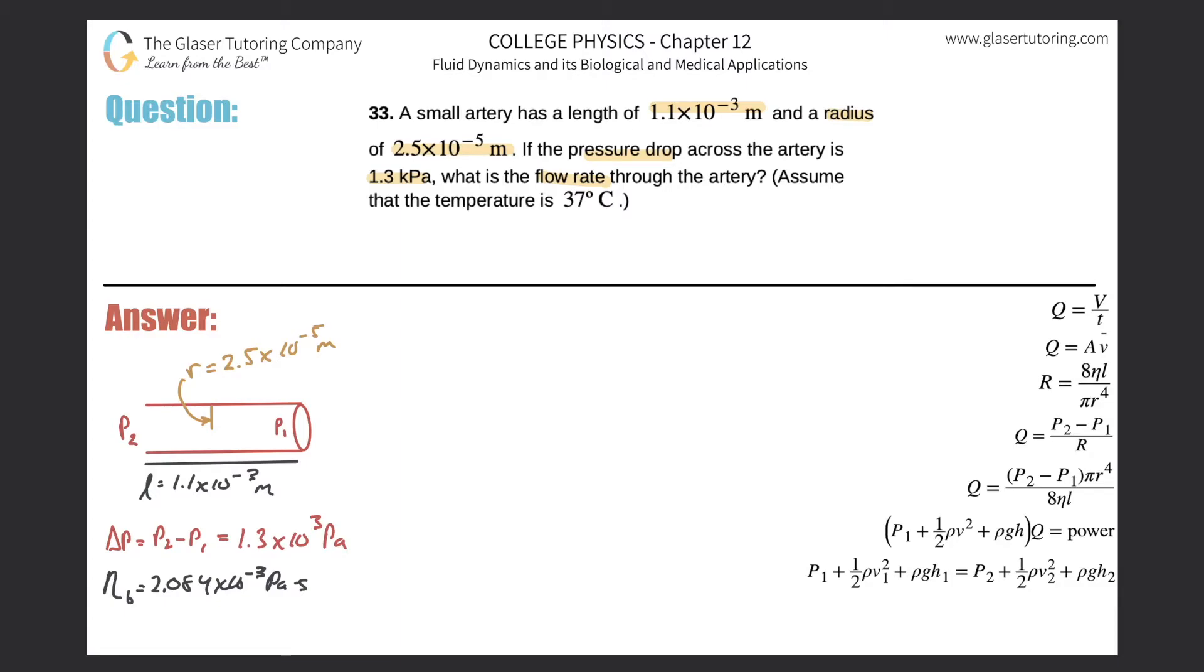So now we need to know the flow rate. We're looking for an equation that relates flow rate to all these variables. This one is nice and straightforward. The flow rate will be equal to the pressure drop multiplied by π multiplied by the radius raised to the fourth power, divided by 8 multiplied by the viscosity of the moving fluid times the length.